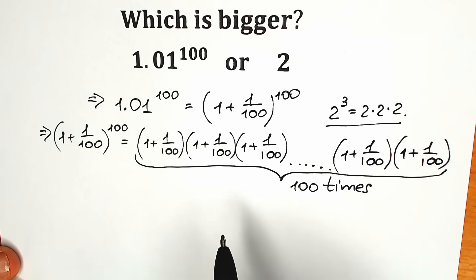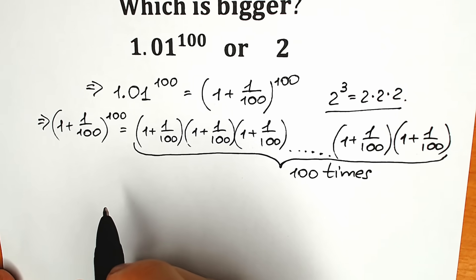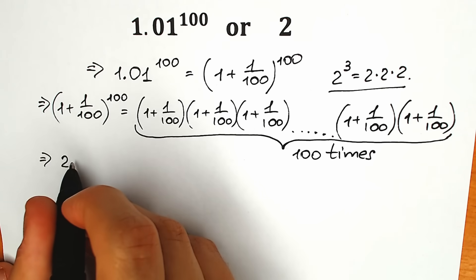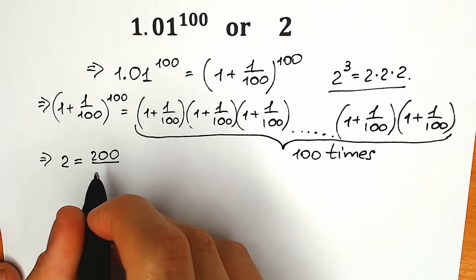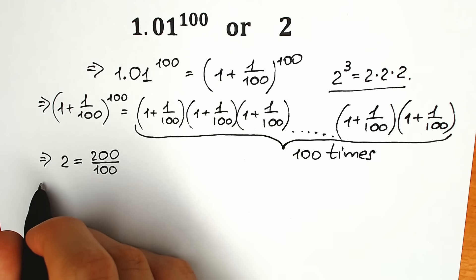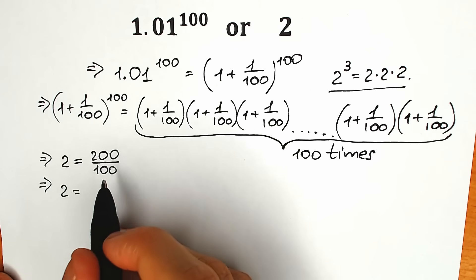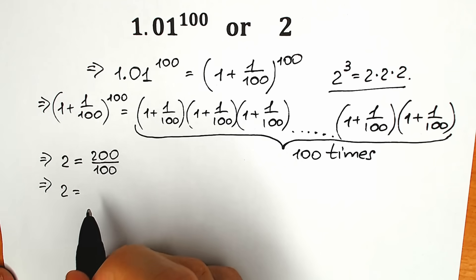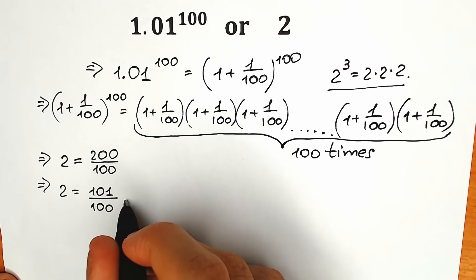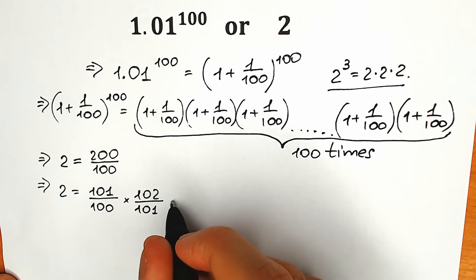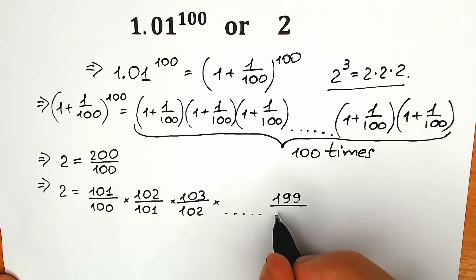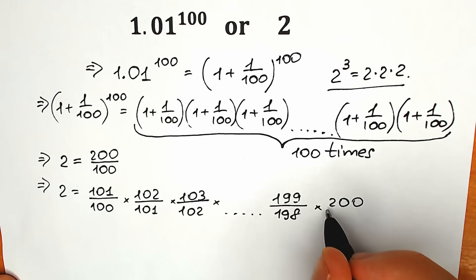Now let's rewrite the right side. We have 2. I'm going to show you a really tricky method. We can write 2 as 200 over 100. And this 200/100 can be expressed as a product of 100 elements: (101/100) times (102/101) times (103/102), all the way through (199/198) times (200/199).